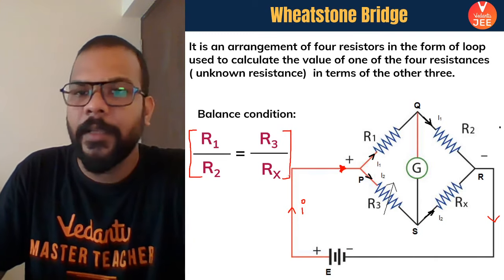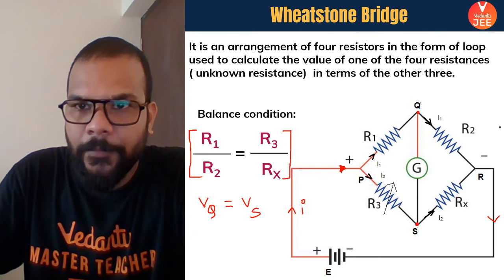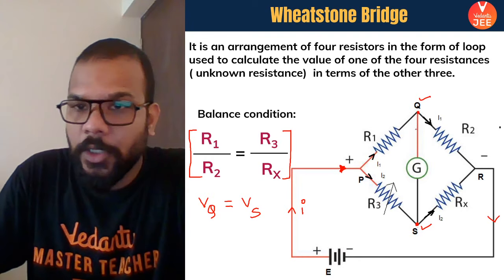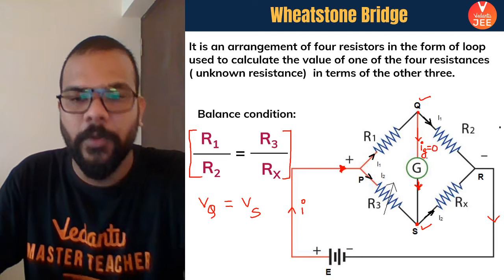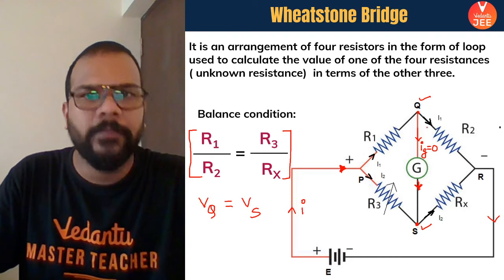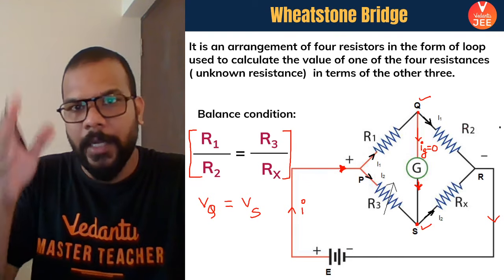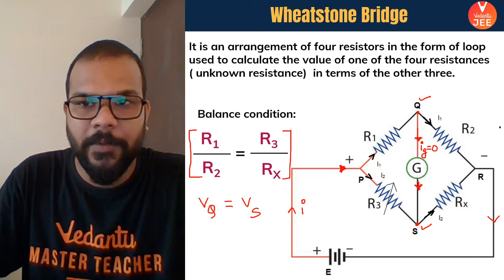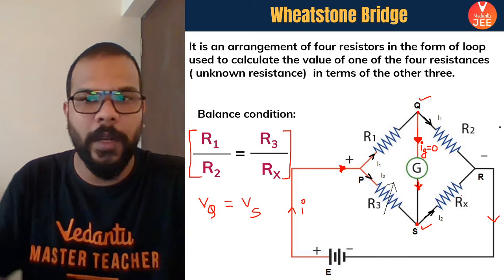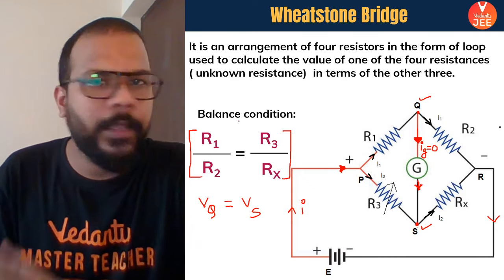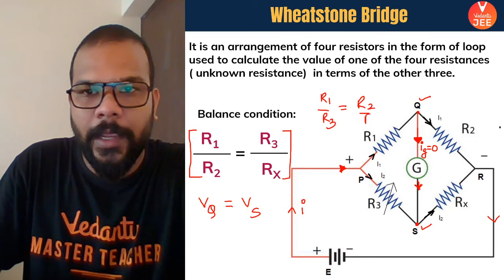When this condition is satisfied, the potential of point Q equals the potential of point S — those two points have the same potential. Because of this, no current flows in that branch, meaning the galvanometer current Ig becomes zero. The galvanometer is placed there just to detect whether current is flowing in that branch. When Ig = 0, we know the condition R1/R2 = R3/Rx is satisfied.